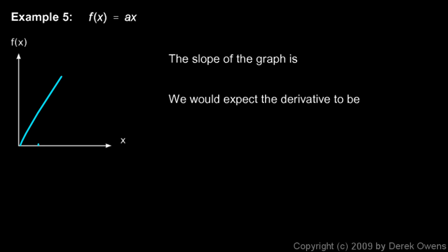For example, if a was 2, this graph would have a slope of 2, but a could be anything, any number. a is a constant, and the slope of this graph is simply a, so we would expect the derivative to be f prime of x equals a.